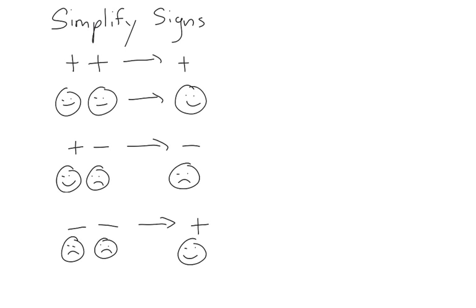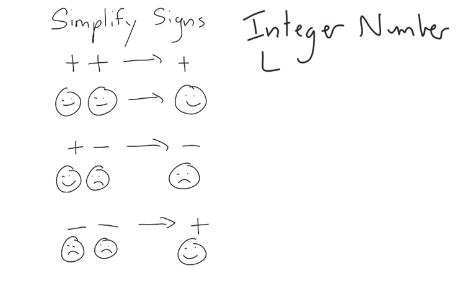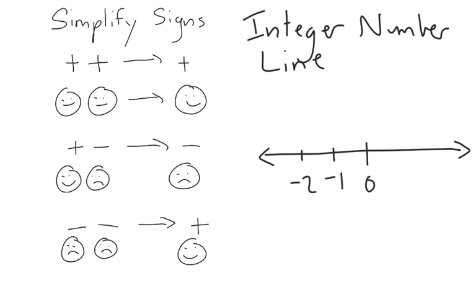The next thing I want to review is something called an integer number line. Some of you may not need to use this — if you do, you can do this on the side of your paper as a rough note. We're going to start with a line with two arrows on either side, and in the very middle you have the number zero. To the left of zero, you have negative integers such as negative one, negative two, negative three, and so on. On the right side, you have positive integers such as one, two, and three.